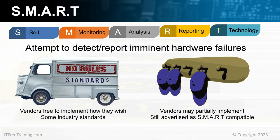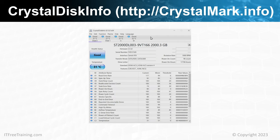To get a better idea of how SMART can be used to detect problems, I will look at some SMART data from a number of different storage devices using freely available software called CrystalDiskInfo. In this example, there are four storage devices connected: two hard disks, one M.2 solid state drive, and one SATA solid state drive. Nowadays, all solid state drives should have SMART, while hard disks — traditionally the high-end ones — have SMART, but low-end hard drives may not.